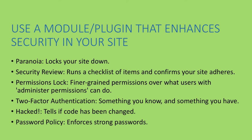Security Review is a great module written by security team members that runs automated checks on your site. Permissions Lock gives finer-grain control over what users with admin permissions can do. Two-factor authentication is one of the easiest things you can roll out. If you don't have some form of two-factor authentication, you should. You can use the TFA and TFA Basic modules for Drupal 7 — they're free, you generate a code on your phone, and it just works. There's also the Duo Security plugin, which has push notifications — it's not free, however. Hacked does verification to see if the code on your file system has changed — it won't protect you from getting compromised but it'll help you know if you have been. Password Policy enforces strong passwords in Drupal 7.